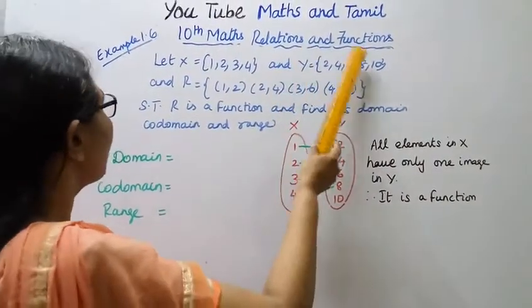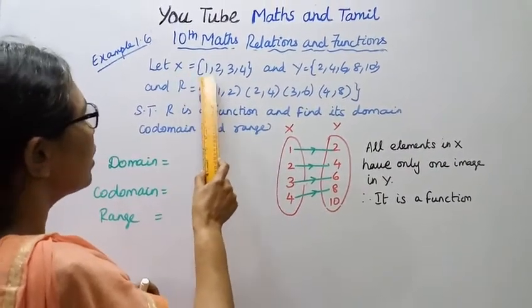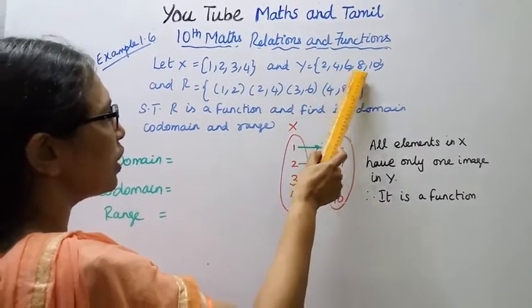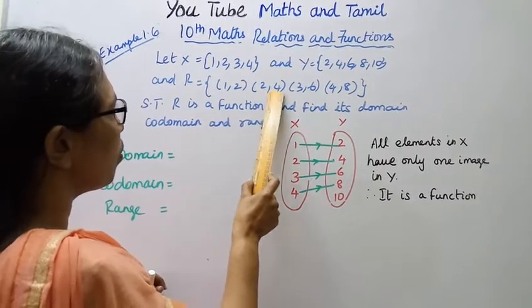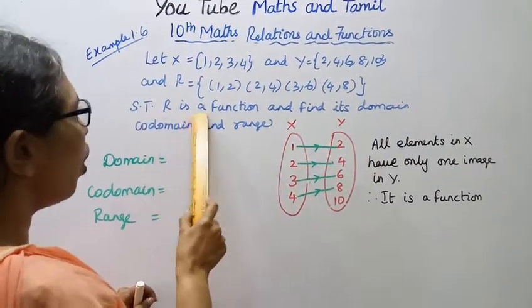10th standard Maths relations and functions, example 1.6. Let X equal to {1, 2, 3, 4} and set Y equal to {2, 4, 6, 8, 10} and R equal to {(1,2), (2,4), (3,6), (4,8)}. Show that R is a function.